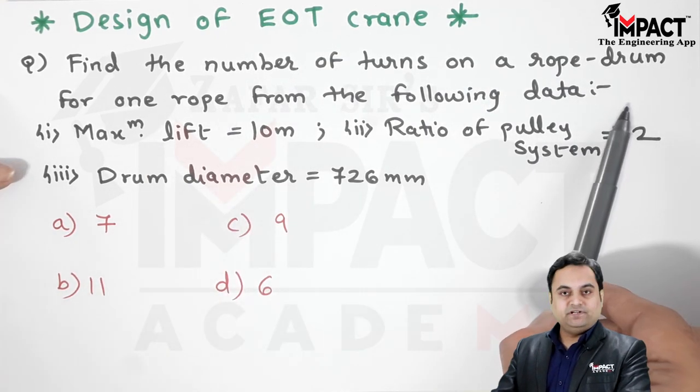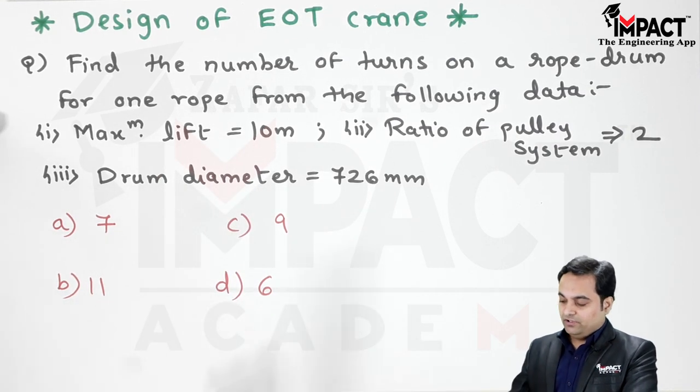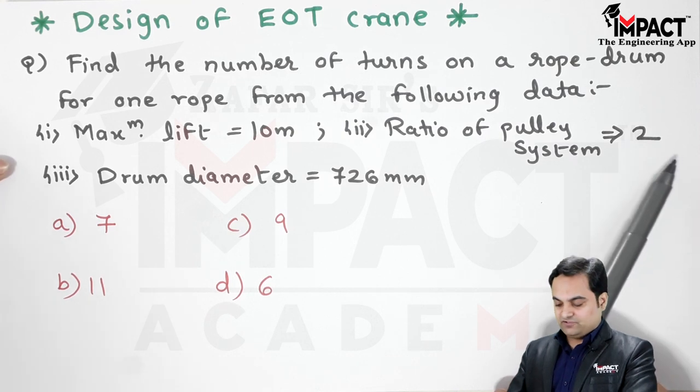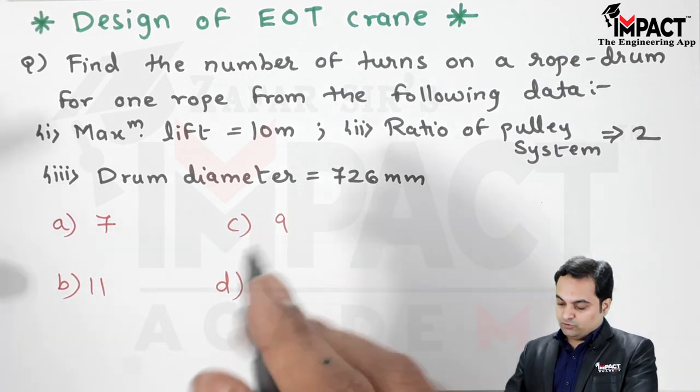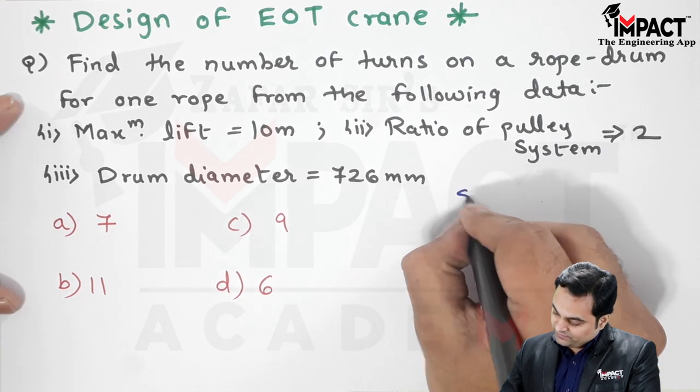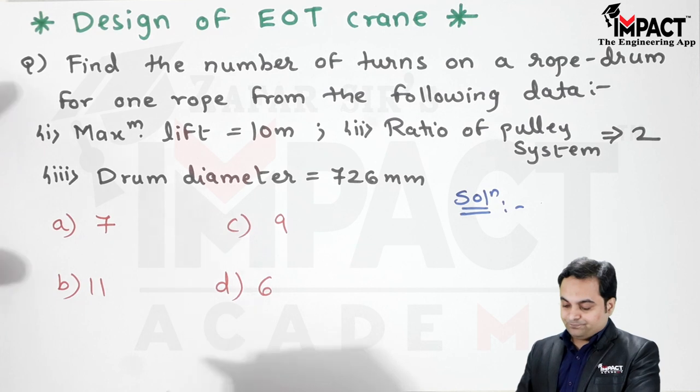The maximum lift is given as 10 meters, that is the height through which the load is lifted. The ratio of the pulley system is given as 2, and the drum diameter is given as 726 mm. So first I'll give the reference. In the solution, four options are given, so out of them one is the correct one.